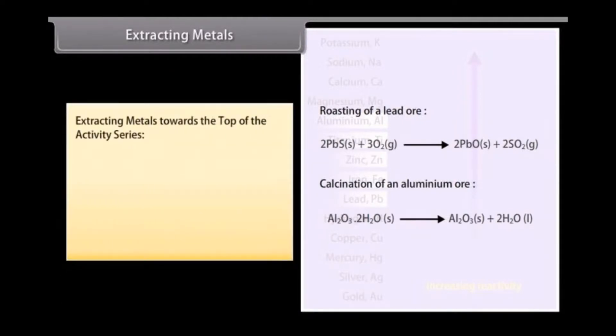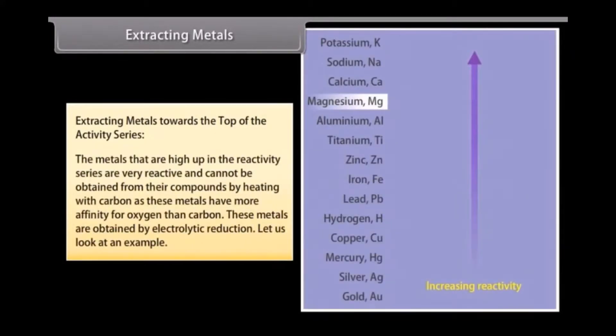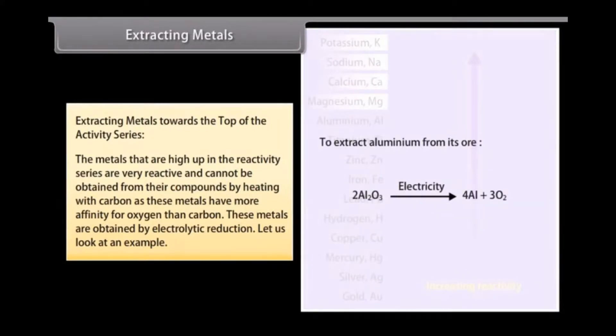Extracting Metals Towards the Top of the Activity Series: The metals that are high up in the reactivity series are very reactive and cannot be obtained from their compounds by heating with carbon as these metals have more affinity for oxygen than carbon. These metals are obtained by electrolytic reduction.